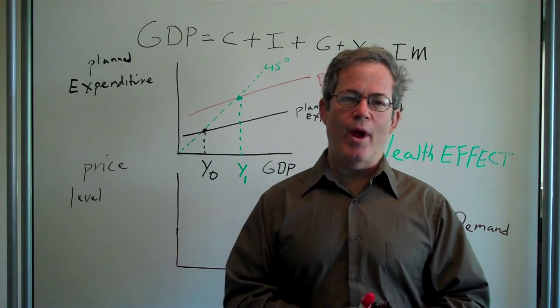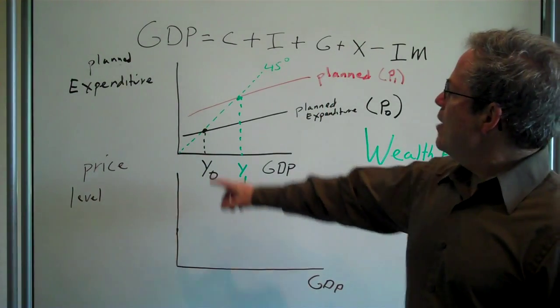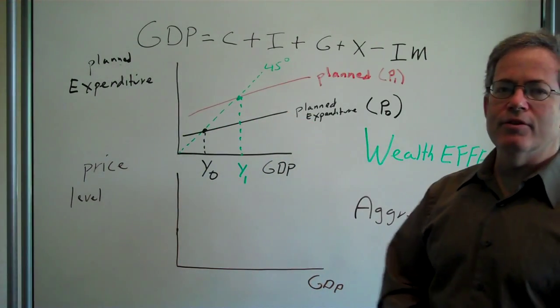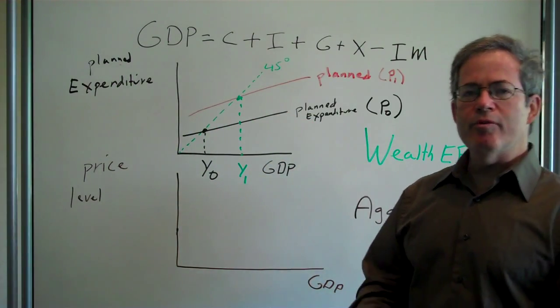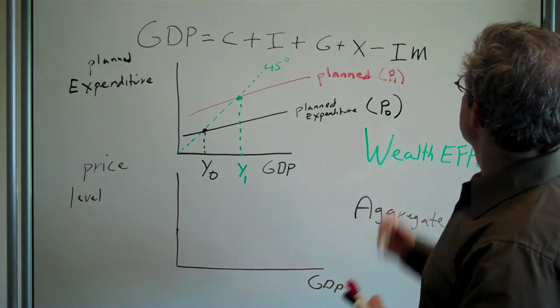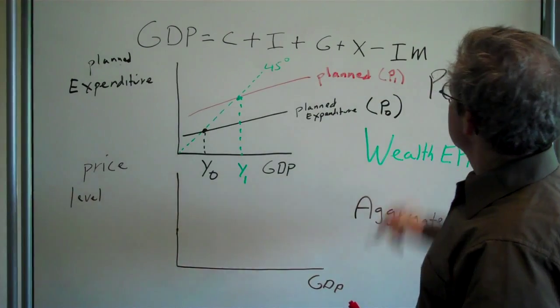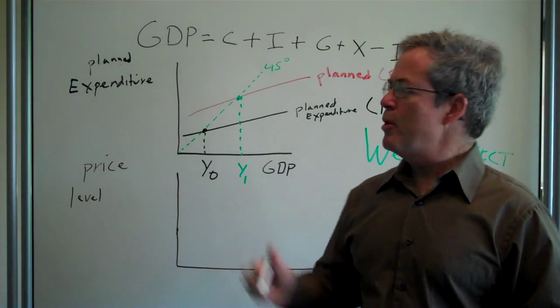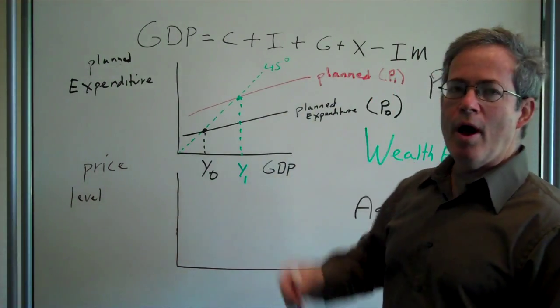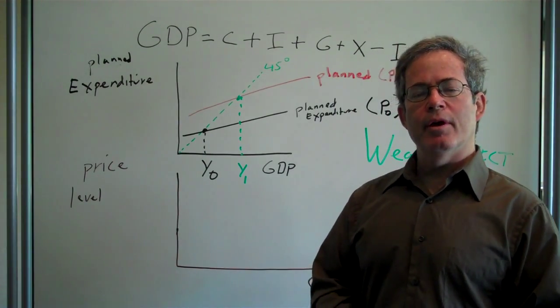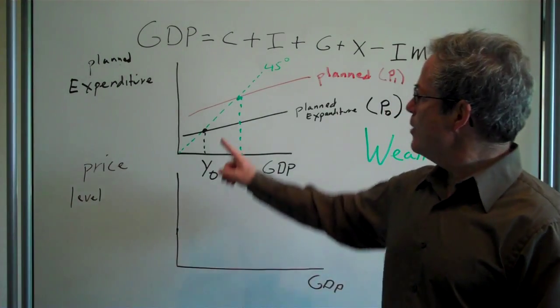So how can we represent that on the graph? Well, here we have planned expenditure before prices fall. Now if prices fall, let's say prices go down from P0 to P1 in the economy as a whole, then your wealth goes up. If your wealth goes up, your desired expenditure goes up.